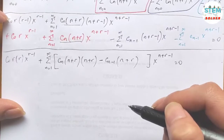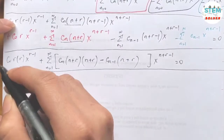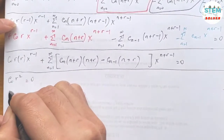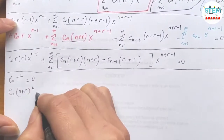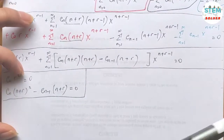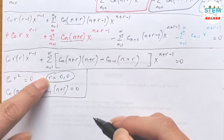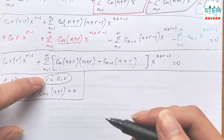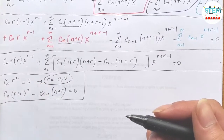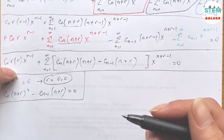Now we equate coefficients. Setting the leading term equal to zero: c_0 · r squared equals 0. Everything inside the bracket equals 0: c_n · (n+r) squared minus c_{n−1} · (n+r) equals 0. Since c_0 is nonzero, r squared equals 0, so r equals 0. This gives only one repeated r value, meaning we get at most one independent solution from Frobenius — but since the equation is second order, we need two.